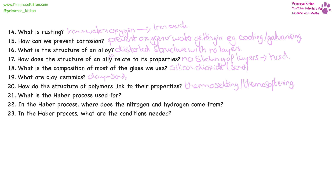The Haber process is used for the production of ammonia. It means it's going to burn instead of melt when heated. The nitrogen and hydrogen come from the air, and the conditions needed are an iron catalyst, about 450 degrees C and about 200 atmospheres.